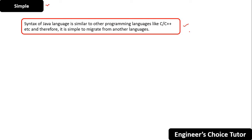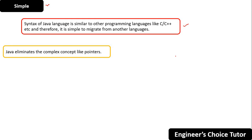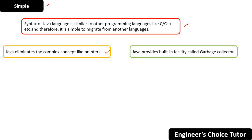Another reason Java is called simple is that it eliminates the complex concept of pointers, which you may have encountered in C and C++. So it's like saying goodbye to pointers — we don't have the pointers concept in Java.